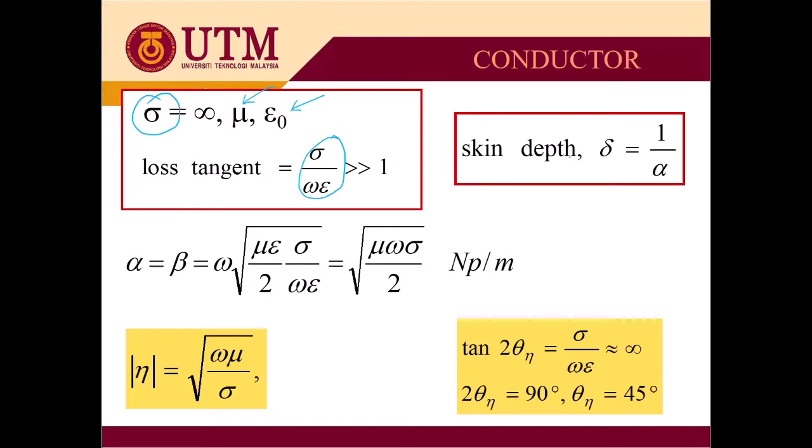The skin depth equal to 1 over alpha. The skin depth represents how deep the EM wave can penetrate the structures or the conductor. And here alpha and beta have the same expression which is equal to square root of mu epsilon sigma over 2 omega epsilon, which can be simplified equal to square root mu epsilon sigma divided by 2 Np/m.